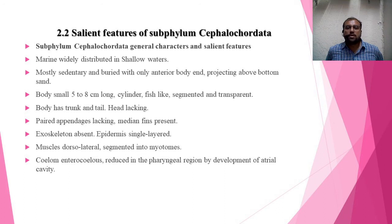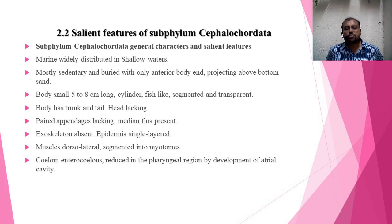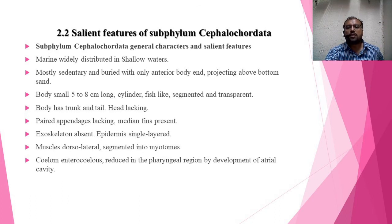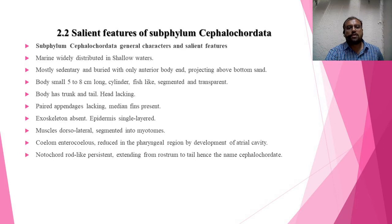In embryonic development, the coelom is formed from the mesodermal pouches of the archenteron, and such coelom is called enterocoel. Basically this places them in the deuterostome group, in which the blastopore develops into an anal opening. The coelom is reduced in the pharyngeal region by the development of the atrial cavity.